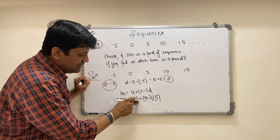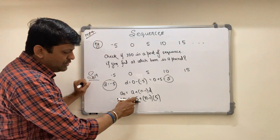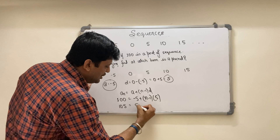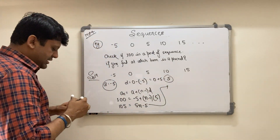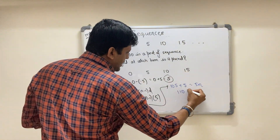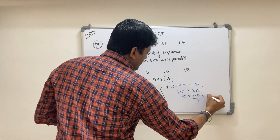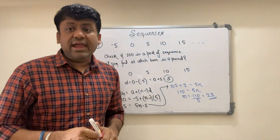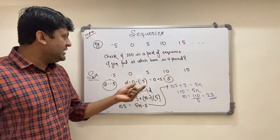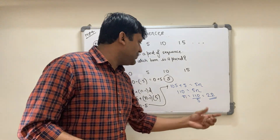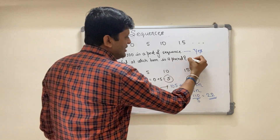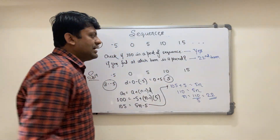Now use the formula: A(n) = a + (n−1)·d. Set A(n) = 100. So 100 = −5 + (n−1)·5. Move −5 to the left: 100 + 5 = (n−1)·5, so 105 = 5n − 5. Then 105 + 5 = 5n, giving 110 = 5n, so n = 110 ÷ 5 = 22. Since n = 22 is an integer, 100 is part of the sequence and is placed at the 22nd term.